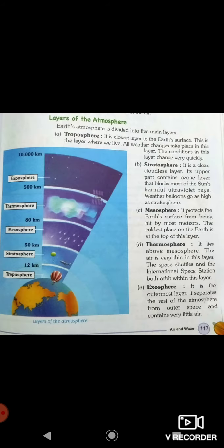Now we will read about different layers of the atmosphere. Now we have studied layers of the earth, which are crust, mantle and core. These are the layers of the atmosphere. Our atmosphere is divided into five layers. Firstly, the troposphere is the closest layer to the surface. This is the layer where we live. All weather changes take place in this layer. Conditions in this layer change very quickly. And what is the range? From the earth to 12 km. You can see in the diagram.